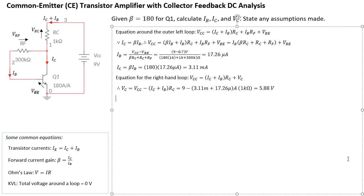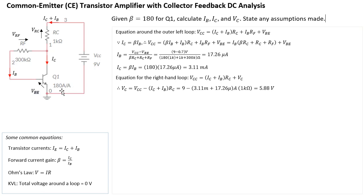So now I have the answers for everything asked: IB, IC, and VC. It's relatively straightforward to derive — the key thing is to label all the currents and voltages correctly before doing your analysis. Thanks for listening, see you in the next video.